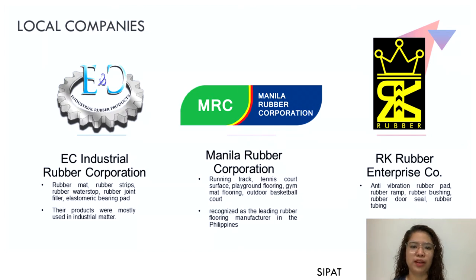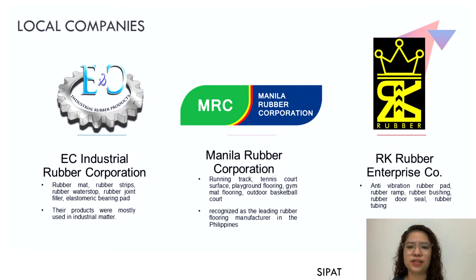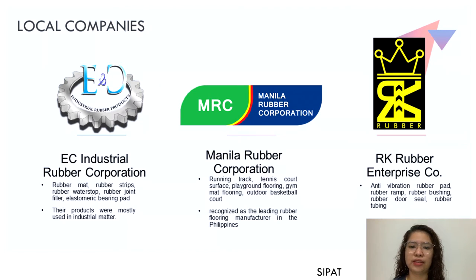Second is Manila Rubber Corporation, a business that specializes in the production of rubber flooring material. They have expanded their product line to include durable rubber floorings in the form of tiles, rolls, sheets, and bricks. They are considered the leading producer of rubber flooring in the Philippines. Their products are suggested for use by architects, interior designers, landscape artists, engineers, contractors, and athletes. Products include outdoor basketball courts, running tracks, tennis court surfaces, playground flooring, and gym mat flooring.